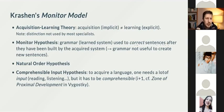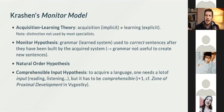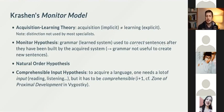The comprehensible input hypothesis is probably the most important idea of Stephen Krashen, and probably the most agreed-upon idea in the research community. To acquire language, you need input — that means exposure: hearing, listening to, or reading the language, seeing the language in use. But this input has to be comprehensible. If you don't understand what you're reading or listening to, you will not be able to acquire it. If you do understand it, you will be able to acquire new structures and vocabulary.